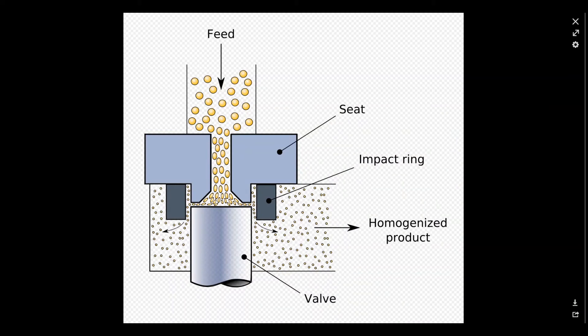Welcome back to another episode of Dynamic Podcast Channel. Today I would like to talk about homogenization. What exactly is homogenization? It is any of several processes used to make a mixture of two mutually non-soluble liquids the same throughout. This is achieved by turning one of the liquids into a state consisting of extremely small particles distributed uniformly throughout the other liquid.